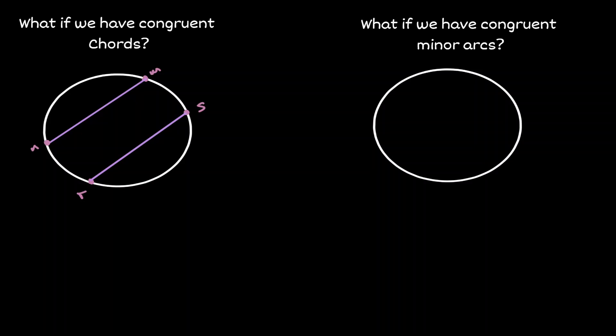If these two chords are congruent to each other, then we can say that the arcs opposite of the chords are also congruent to each other. Congruent chords create congruent arcs.